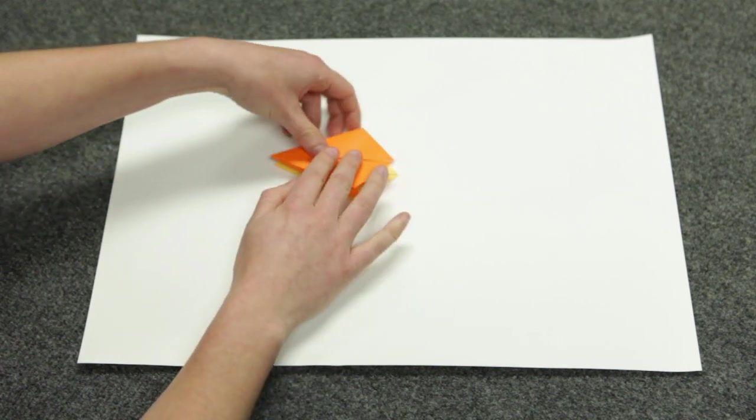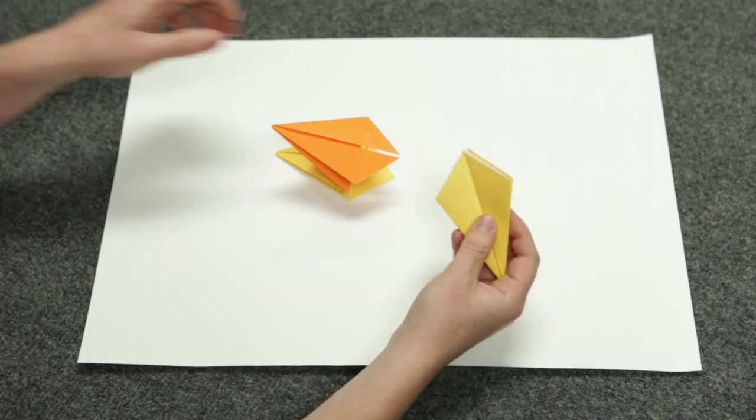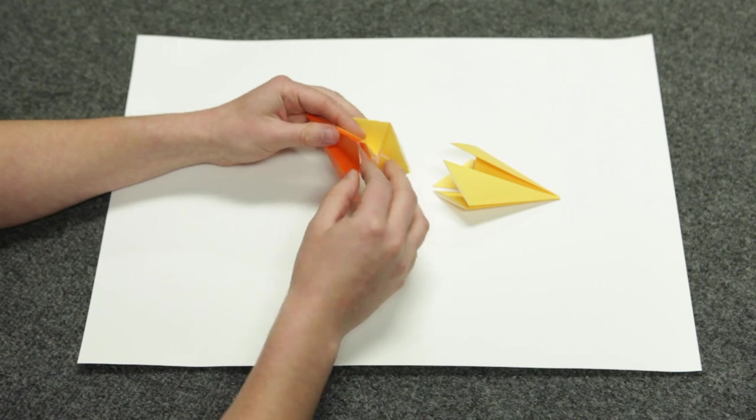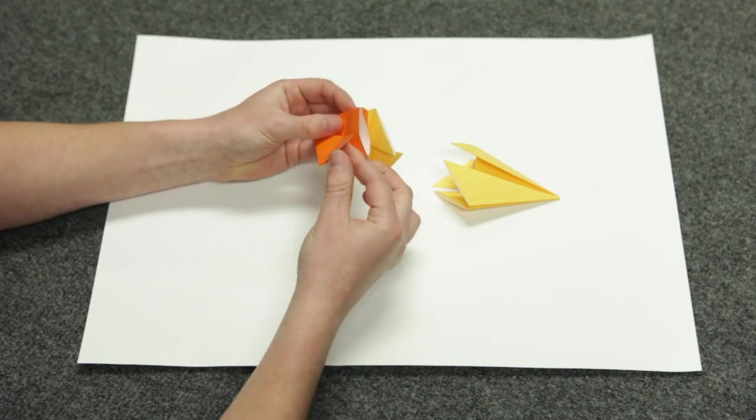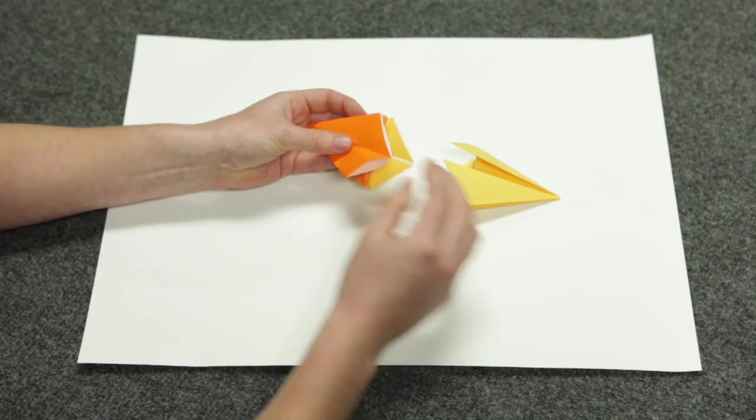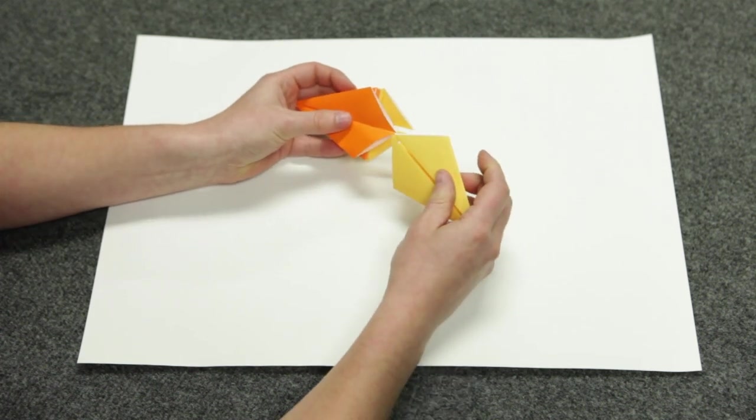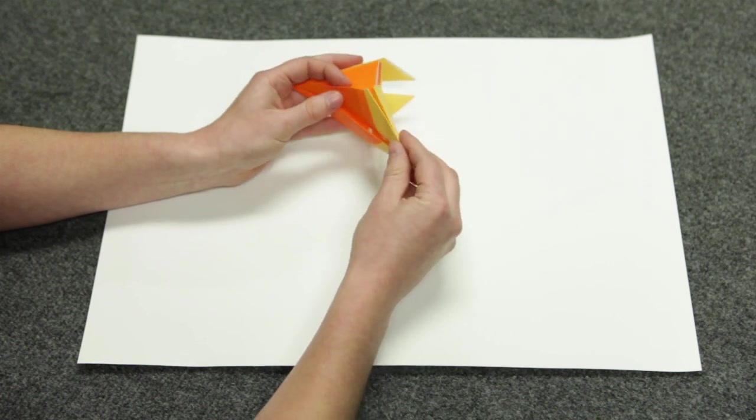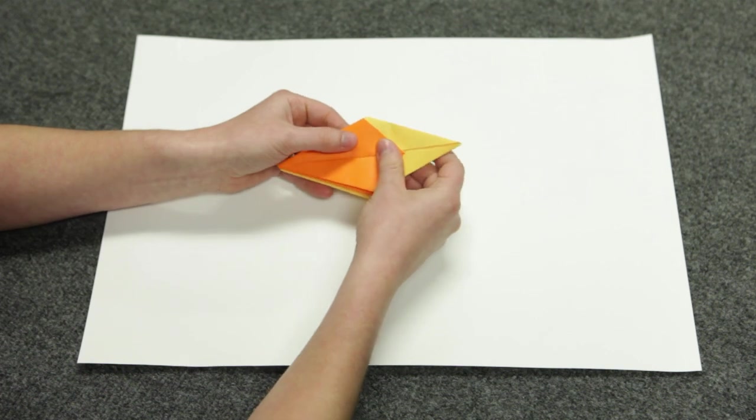We're going to repeat this process to add the next amino acid. Open up the tabs and slide the closed tabs of a new amino acid into the open tabs of the other. Again, make sure you're doing this with the top tabs only. Once they're connected, fold them in half.